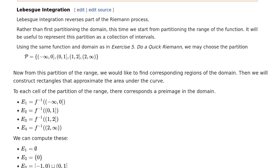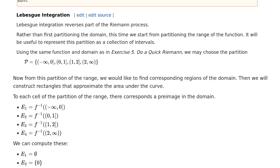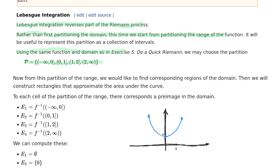Let's move on to Lebesgue integration. Lebesgue integration reverses the order — this time we're going to partition the range. Using the same function as before, we use a partition with partition points 0, 1, 2. We think about the partition more as intervals: from negative infinity up to 0, then 0 to 1, 1 to 2, and 2 to infinity. That's our new concept of a partition.